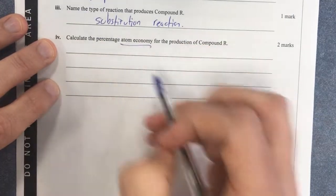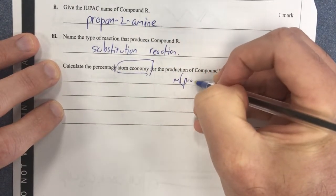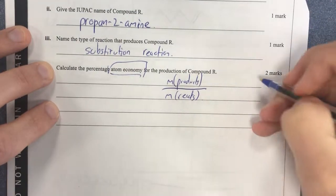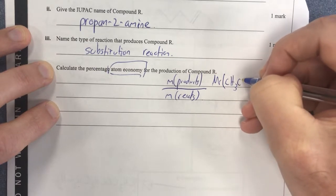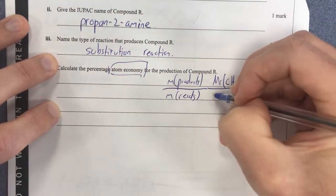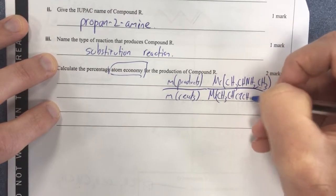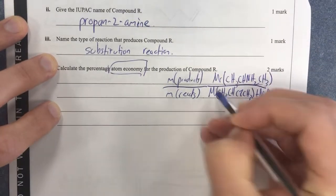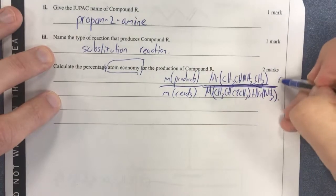Lastly, percentage atom economy for this reaction. Atom economy is mass of product over mass of reactant. So therefore, here we're going to take our molar mass of CH3CHNH2CH3 and divide it by the mass of our whole thing here, molar mass of CH3CHClCH3 plus molar mass of NH3. So therefore, that's our mass of our desired product over the mass of the total reactants. Obviously, that's going to be times by 100 to get our percentage.